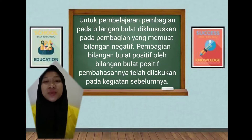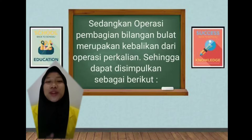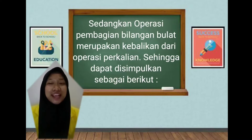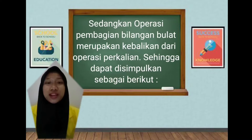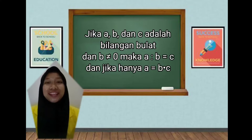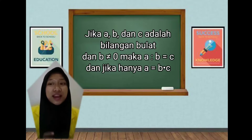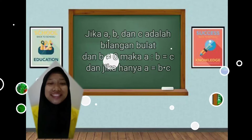Pembagian merupakan proses aritematika dasar di mana satu bilangan dipecah rata menjadi bilangan yang lebih kecil dengan bilangan pembaginya. Operasi pembagian bilangan bulat merupakan kebalikan dari sebuah perkalian dan dapat kita simpulkan sebagai berikut: apabila terdapat A, B, dan C adalah bilangan bulat, kemudian B tidak sama dengan 0, maka A dibagi B sama dengan C, dan jika hanya A sama dengan B dikali C.